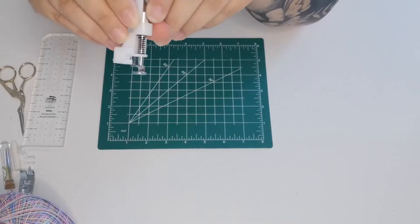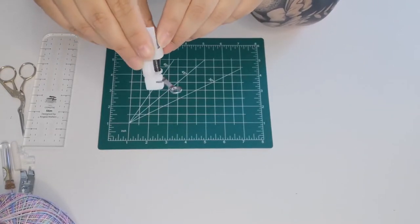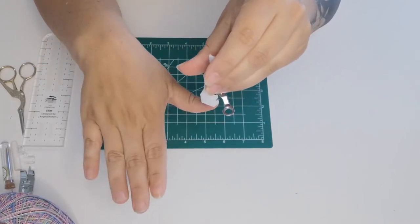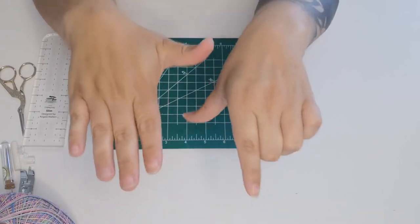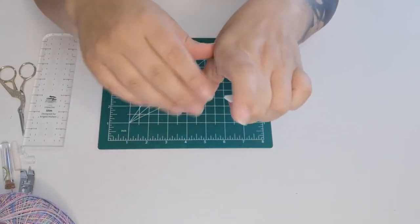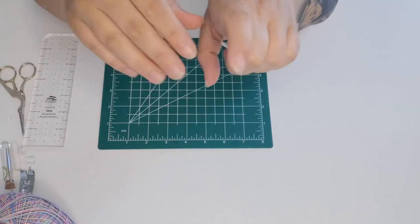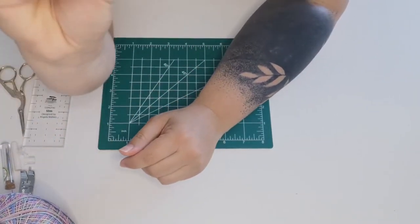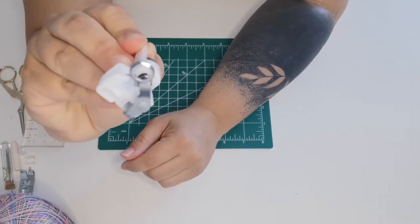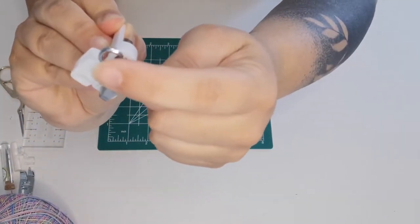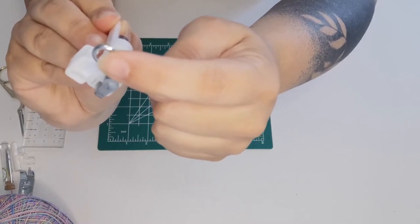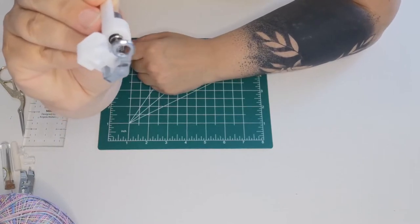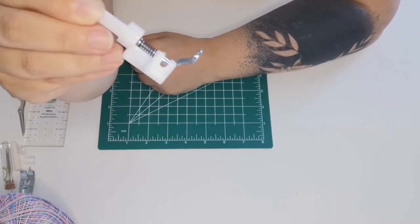To use this you have to drop your feed dogs. Your machine should have a little button that you can slide across and that's going to drop your feed dogs, which means that your machine is not automatically going to pull your fabric through. So you can move your fabric whichever way that you want, and that's where this foot comes in. Your needle goes through there and that's where your stitch is going to be. So you can do free motion designs. You can do thread painting with this.